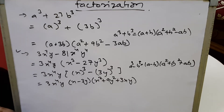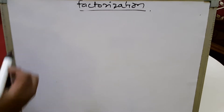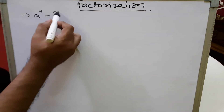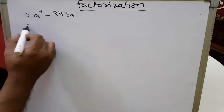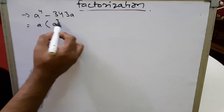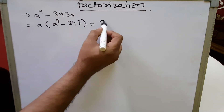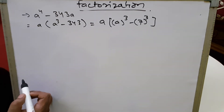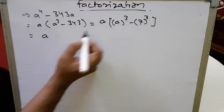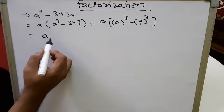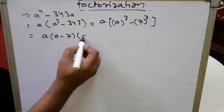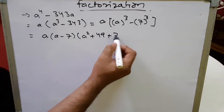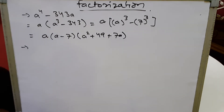Next sum: a⁴ - 343a. We can see that a is common in both terms, so taking a common gives a(a³ - 343). Now 343 is 7³, so this becomes a(a³ - 7³). Applying the difference of cubes formula, we get a(a - 7)(a² + 49 + 7a).